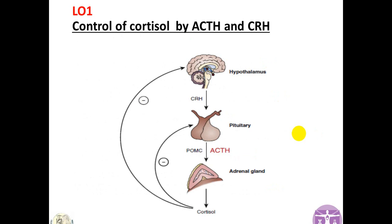This is the way our body controls cortisol secretion. The hypothalamus secretes corticotrophic hormone releasing hormone in response to stressful situations such as infection, fever, trauma, or any disease. CRH stimulates the anterior pituitary gland to secrete adrenocorticotrophic hormone from a precursor called pro-opiomelanocortin. This ACTH then stimulates the adrenal cortex to produce cortisol, and cortisol has a negative feedback on both ACTH and CRH.